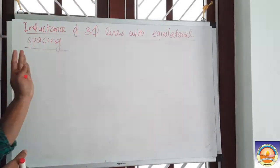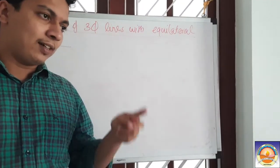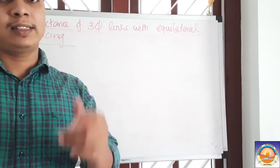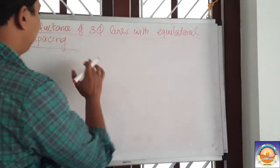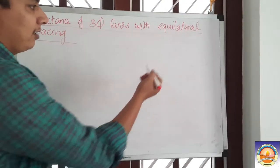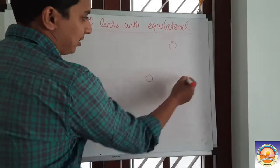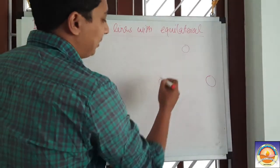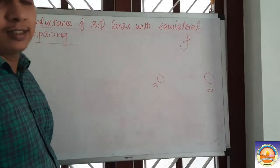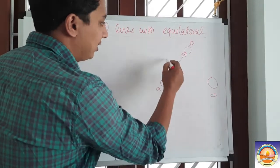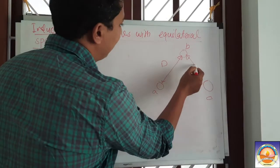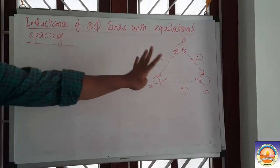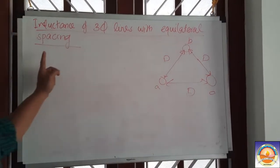We are going to discuss inductance of three-phase lines. In the last lecture, we discussed the general case for composite conductors. Now let us get into inductance of three-phase lines with equilateral spacing. We have three conductors placed on the vertices of an equilateral triangle — conductors A, B, and C — and the distance between each of them is given by D. All these distances are equal; they are equidistant from each other.